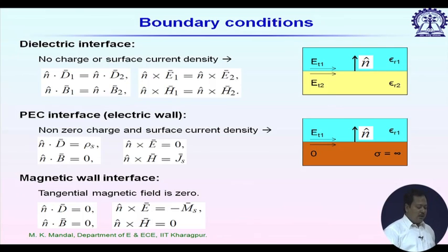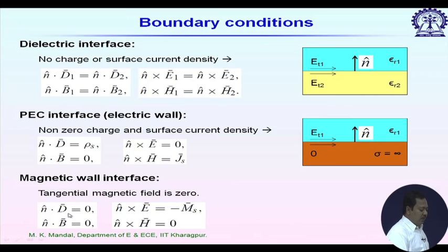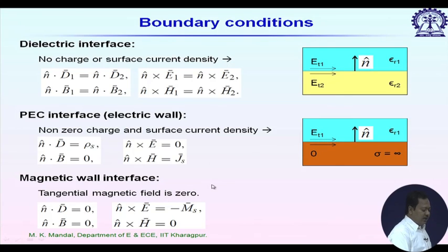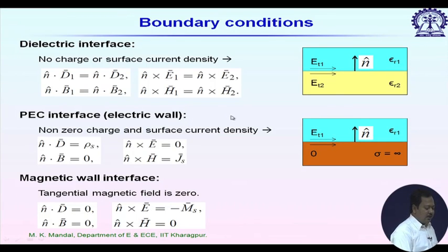We may also have a magnetic wall interface, sometimes called an open circuit condition. For a magnetic wall, the tangential magnetic field is zero. The normal component of D is zero, the normal component of B is zero, the tangential component of electric field is discontinuous by an imaginary magnetic surface current density, and the tangential component of H is also zero. In summary: for an electric wall (short circuit), only the normal component of electric field exists; for a magnetic wall (open circuit), only the normal component of magnetic field exists.